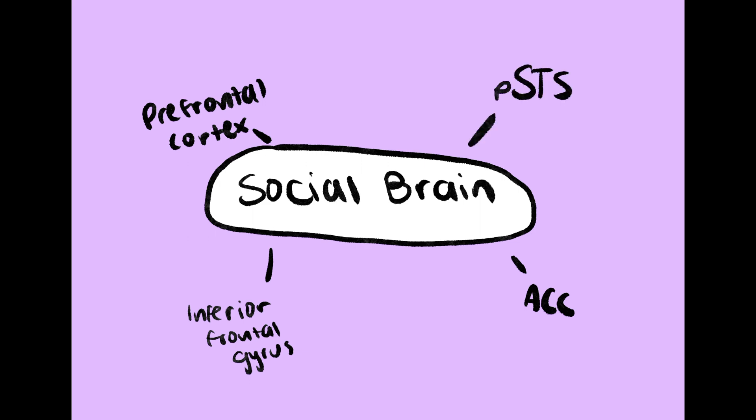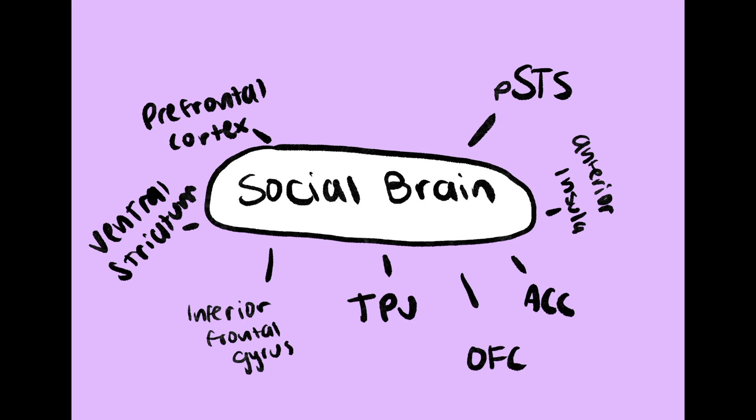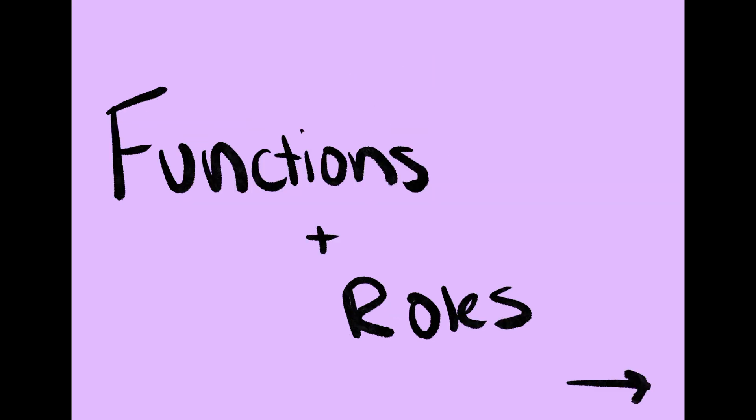The social brain is comprised of regions such as the prefrontal cortex, anterior cingulate cortex, inferior frontal gyrus, posterior superior temporal sulcus, the anterior insula, ventral striatum, temporoparietal junction, orbitofrontal cortex, and amygdala. Let's go into some of the functions and roles of these regions of interest.